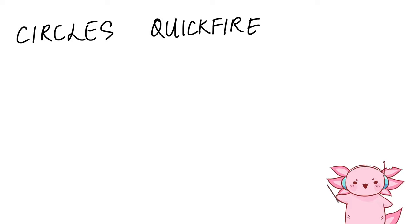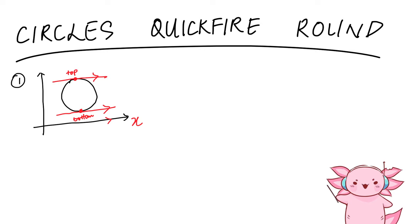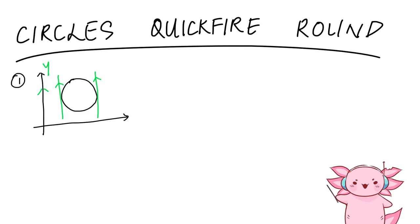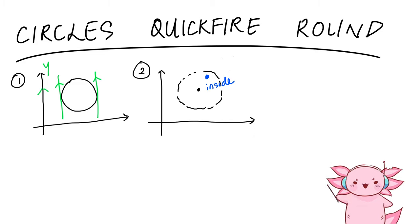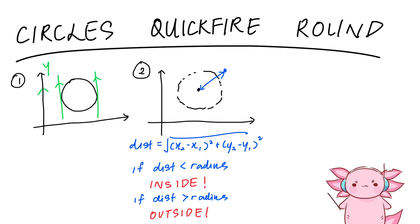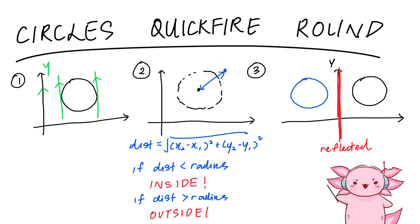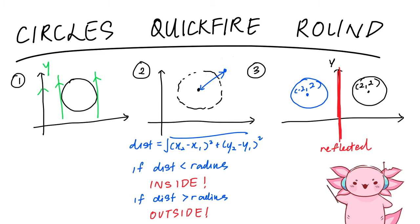Circles quickfire round! Number 1: a tangent at the top or bottom of the circle is always parallel to the x-axis; same logic applies left and right. Number 2: to show whether a point is inside or outside the circle, calculate its distance from the center — if less than radius, it's inside; if more, it's outside. Number 3: if a circle is reflected about the y-axis, it mirrors to the other side — if the center is (2, 2), the reflected center is (−2, 2).